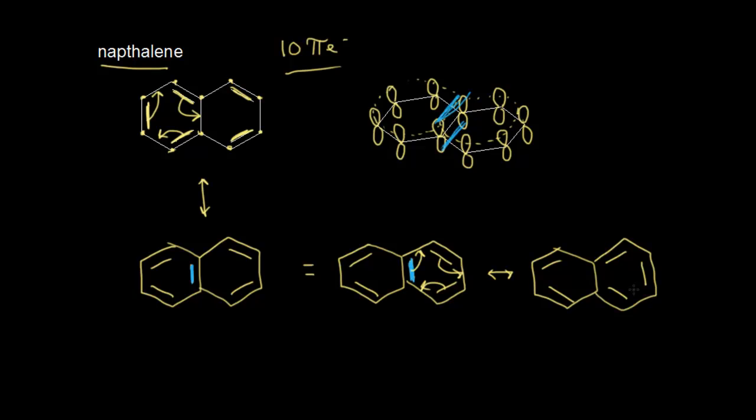These resonance structures show you a little bit about why naphthalene does exhibit some aromatic stability. It's not quite as aromatic as benzene — all of benzene's bonds have the exact same length — but naphthalene is shown to have some aromatic stability. Naphthalene is the simplest example of what's called a polycyclic aromatic hydrocarbon, and there are several different examples of these, such as anthracene and many ring systems that contain fused benzene-like rings throughout the system.